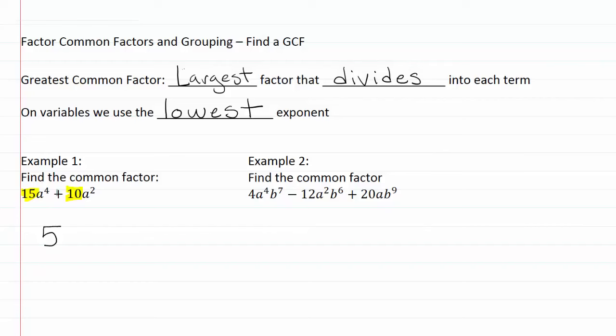Our GCF for the numbers is five. Now let's take a look at the variables. We've got a to the fourth and a to the second or a squared. We want to use our rule that on variables we use the lowest exponent. Our lowest exponent here is two because two is less than four. So we end up with a squared. That means our common factor in this problem is five a squared. It can divide into both of these terms.